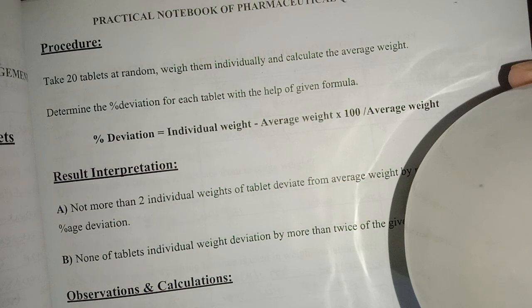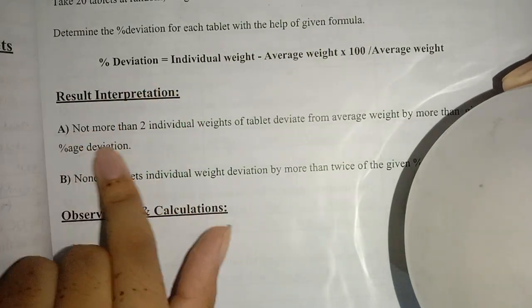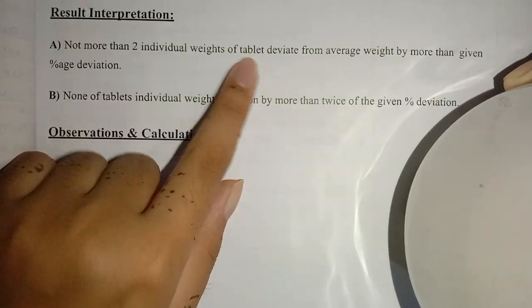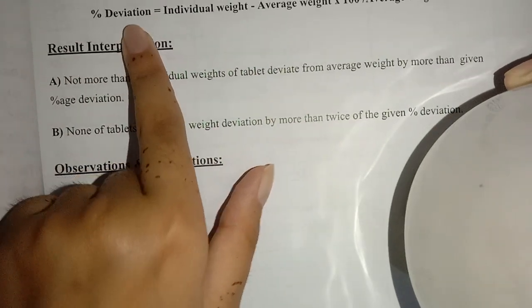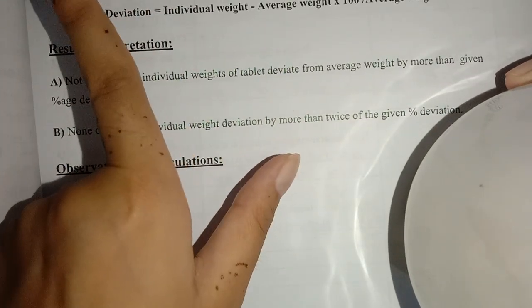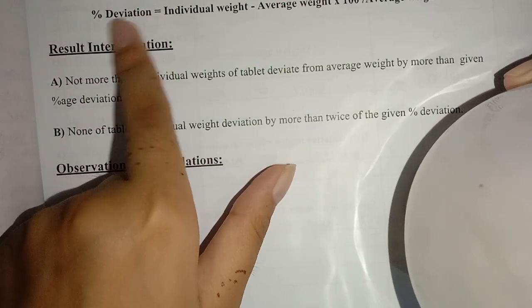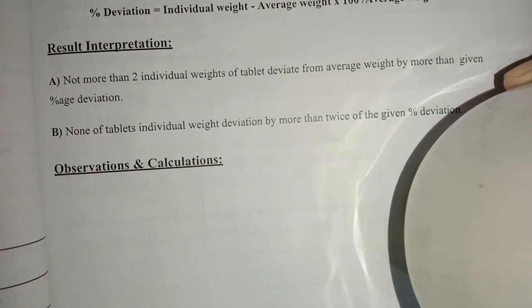Then you will find the average weight. Now result interpretation: not more than two individual weights from 20 tablets should deviate from the average weight by more than the given percentage deviation. You have to find deviation from all 20 tablets.